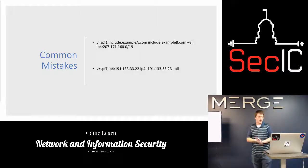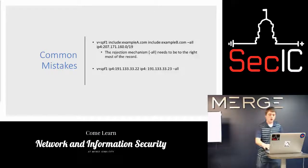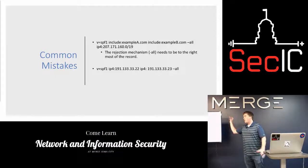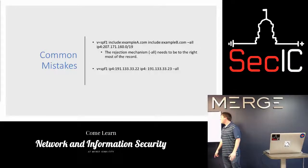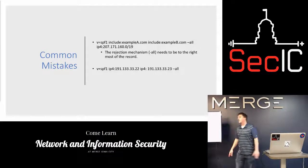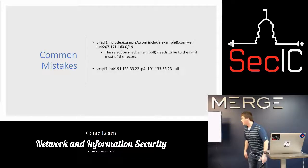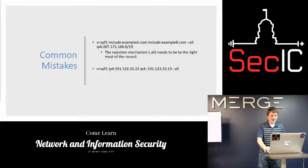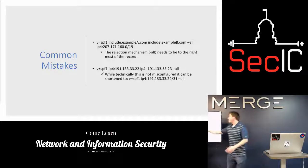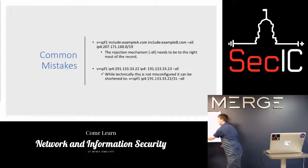Another slide of mistakes: the all mechanism always has to be the last — the rightmost — portion of the record. A question came up about whether the IP range and domain range have to match — no, it's basically an OR. Also, you can use CIDR notation to shrink a record down — so instead of listing multiple individual IP addresses, you can condense them into a single CIDR block. Keep that in mind.